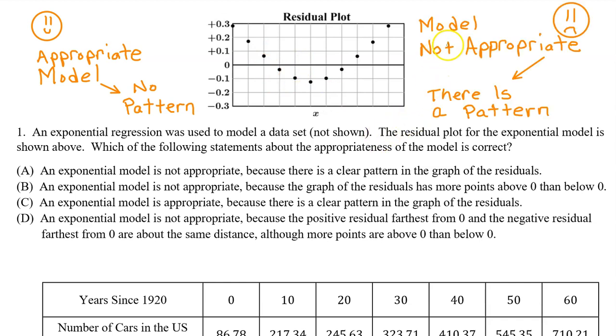If the model used was not appropriate for the data, there will be a pattern in the residual plot. Number 1: An exponential regression model was used to model a data set not shown. The residual plot of the exponential model is shown above. Which of the following statements about the appropriateness of the model is correct?